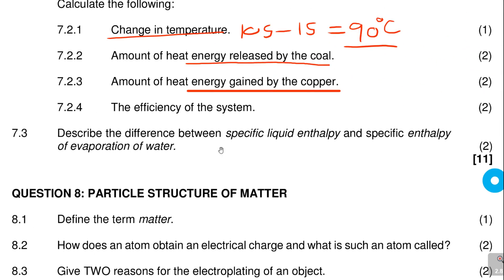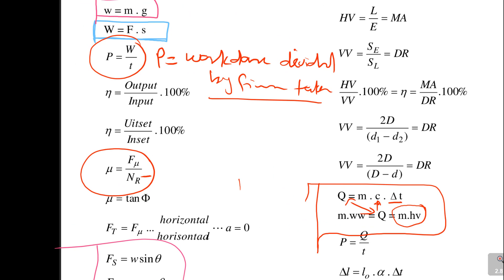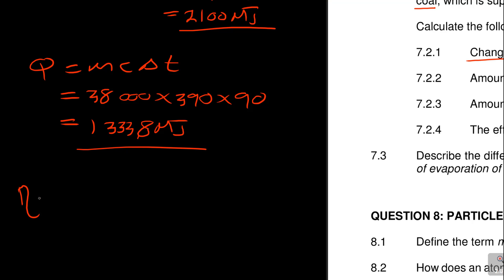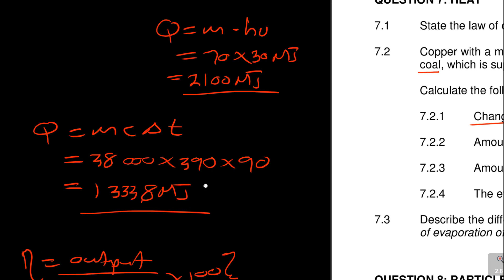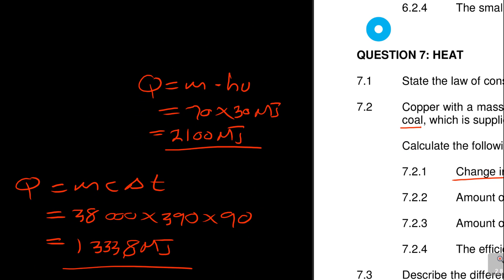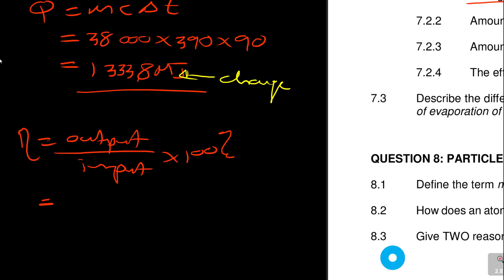The next question is the efficiency of the system — two marks. Efficiency: there is the formula. The symbol eta means efficiency, and it equals output over input times 100%. The coal supplied is the input, and the heat energy that caused the change in the copper is the output.